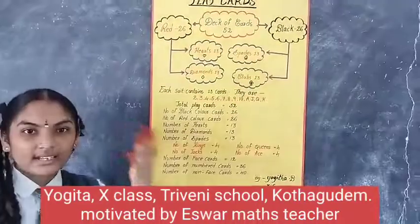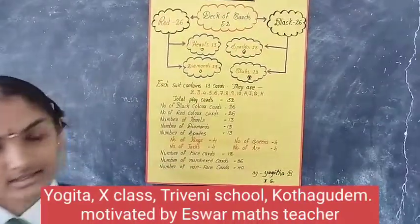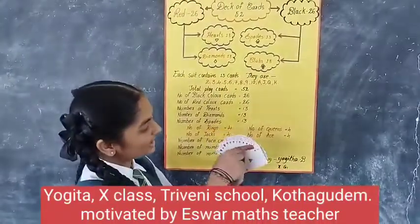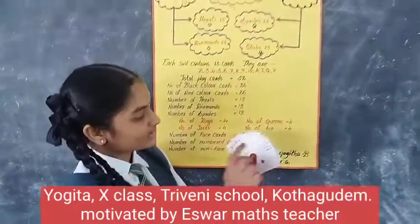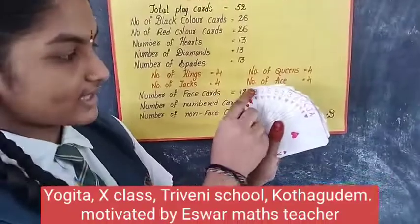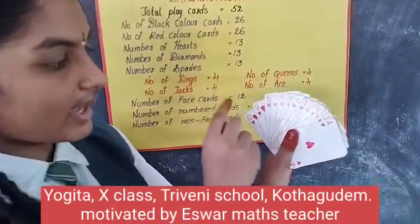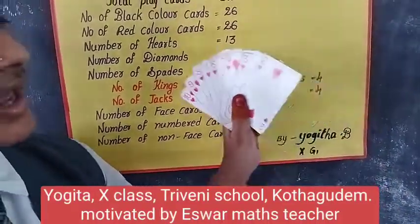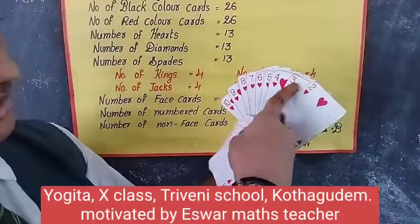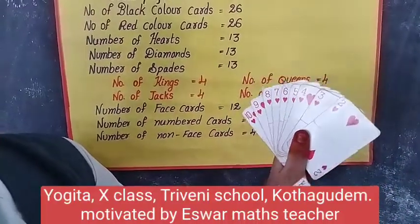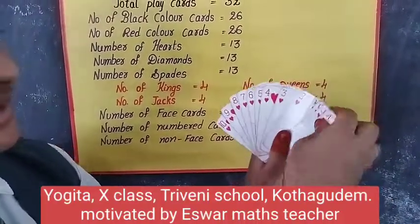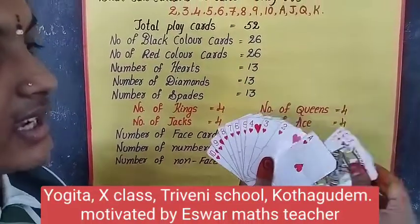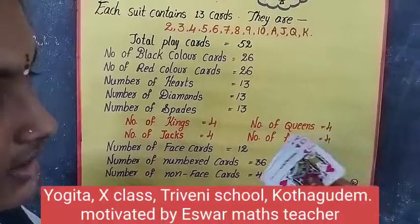Now I want to show the 13 heart cards. You are seeing the 13 heart cards — that is 2, 3, 4, 5, 6, 7, 8, 9, 10. These 9 cards are numbered cards. In addition to those 9, there is K, Q, J, and A. These 4 are lettered cards.